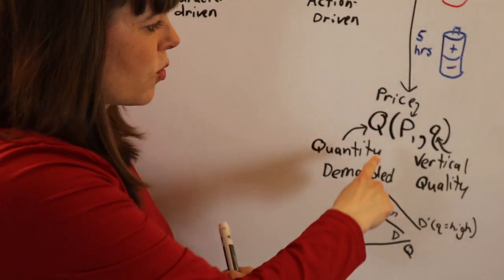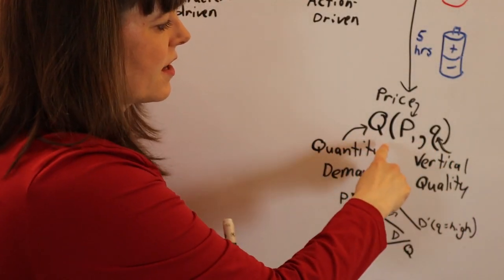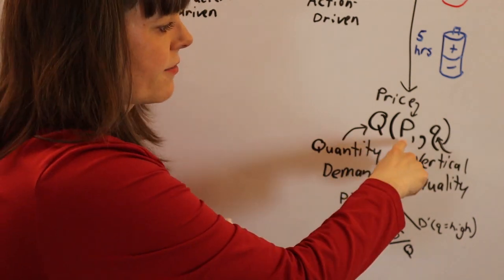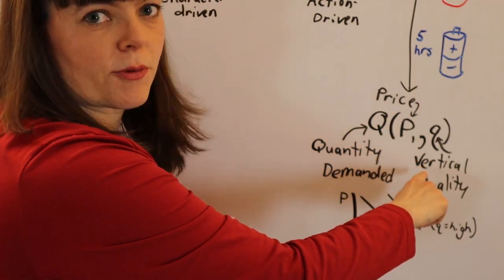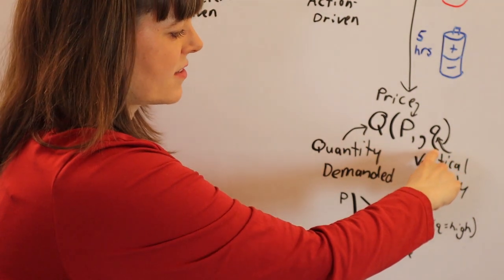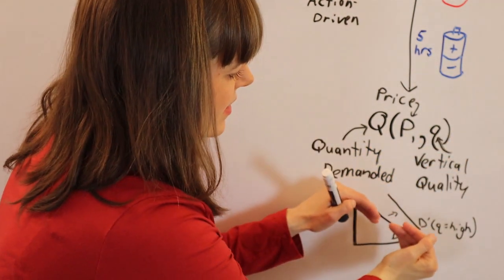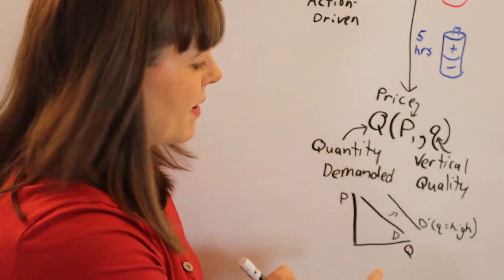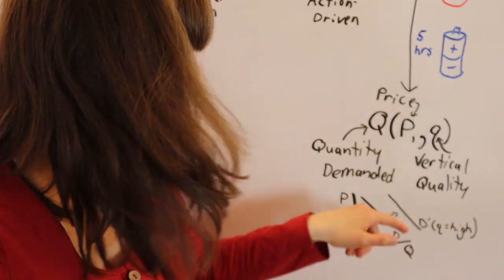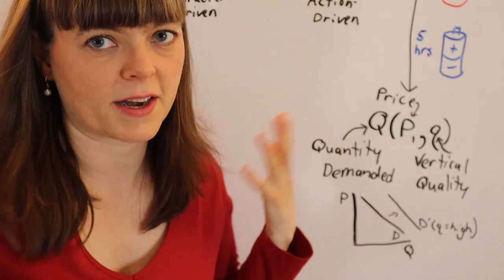For vertical quality, we've got a demand function, quantity demanded as a function of price, and we stick in the additional variable vertical quality of the product. This means that increasing the vertical quality is going to shift out the demand function and lowering vertical quality is going to shift in the demand function.